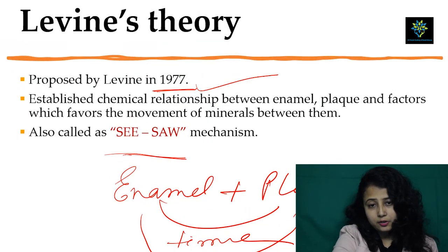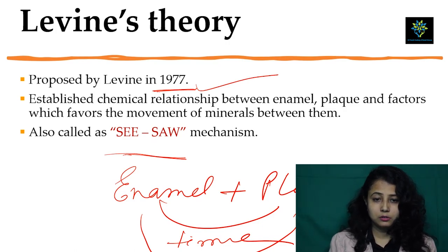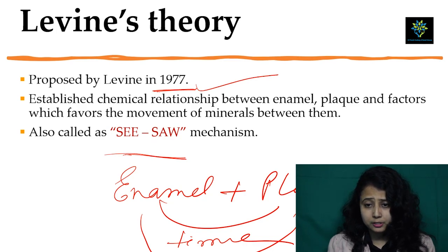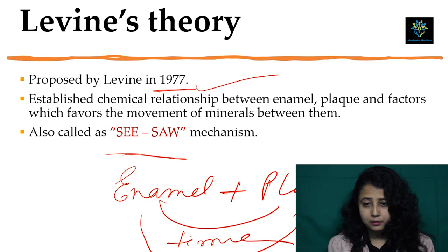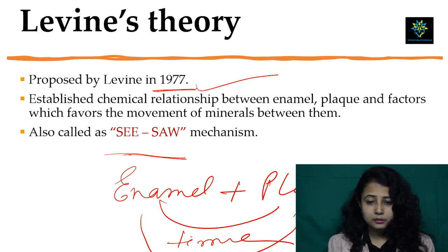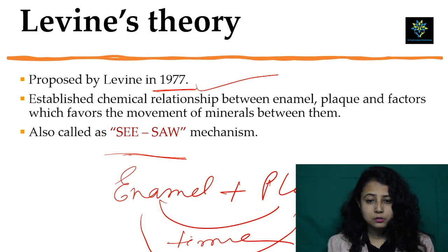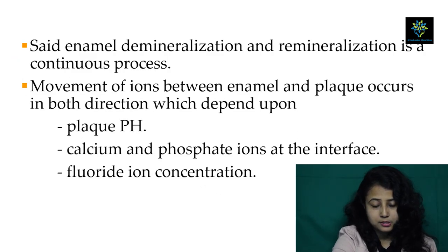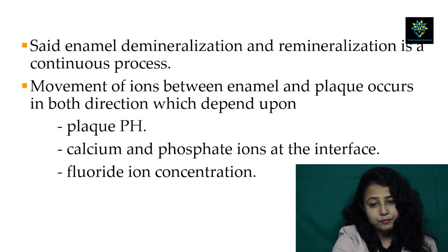Then comes Levin's theory, proposed by Levin in 1977. He established a chemical relationship between enamel and plaque and factors which favored the movement of minerals between them. It is also known as the CISO mechanism. Enamel demineralization and remineralization is a continuous process. Movement of ions between enamel and plaque occurs in both directions, depending upon plaque pH, calcium and phosphate ions at the interface, and fluoride ion concentration.